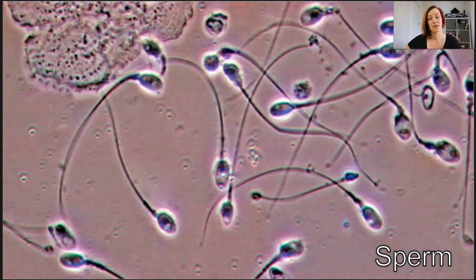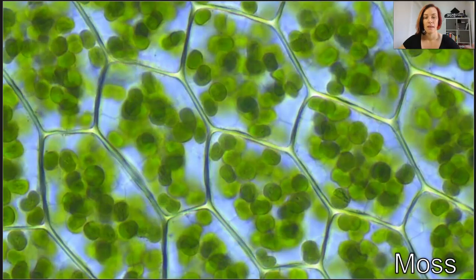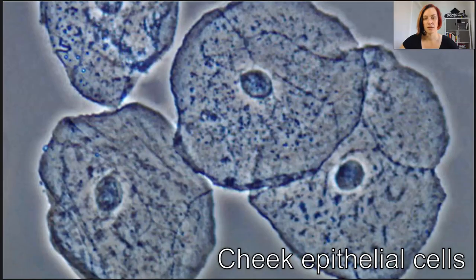Sperm cells have that specific tail for motility, so they can swim around. Chloroplasts are plenty here in the moss. Cheek epithelial cells are rounded, not like that structural integrity that plant cells have.